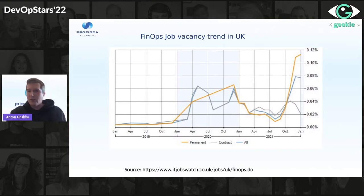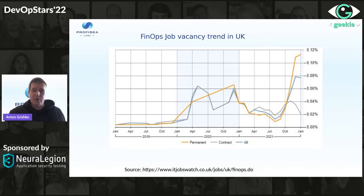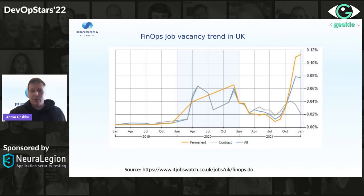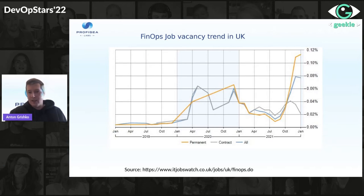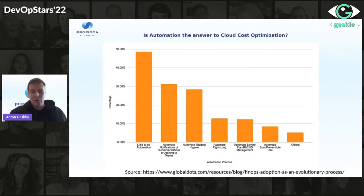The next topic is trends. I found this graph showing FinOps job trends in the UK. In 2019 there were no FinOps jobs at all, and then it started to pop up and grow. We are seeing a new market growing before our eyes. It was the same story with DevOps engineers — there were none, and then it exploded. The same is happening for FinOps. More and more companies will want FinOps practitioners.